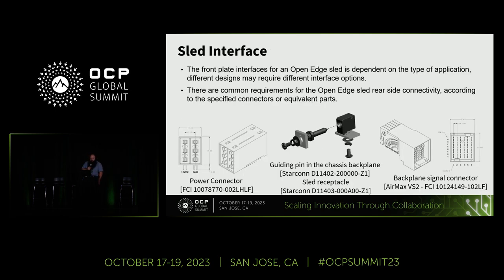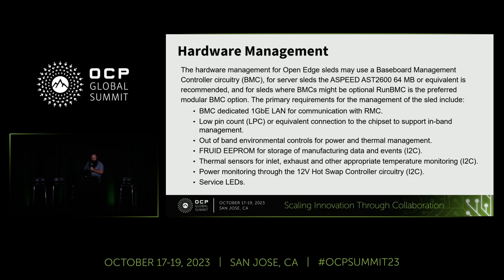The sled interface includes a front plate with an interface dependent on the type of application, so you can change that front plate. There's a power connector, guiding pin, and backplane signal connector. From a hardware management perspective, management uses baseboard management controller circuitry — the AST 2600 or equivalent is recommended. The BMC has a dedicated 16 gigabit Ethernet LAN for communication with the RMC, and thermal sensors are also included.